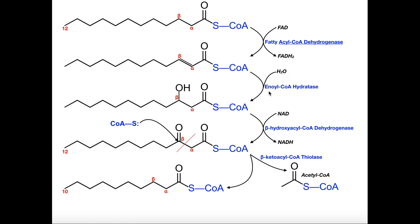The second reaction is catalyzed by enoyl-CoA hydratase. In this reaction, water is added across the double bond at the beta position. When water attacks the beta carbon, we end up with an OH group on the beta carbon. It's called a hydratase because we've hydrated the beta carbon. The double bond is gone, but we've essentially oxidized the beta carbon — thus the name beta-oxidation. This gives us what we call a beta-hydroxyacyl-CoA, because we have a hydroxyl group on the beta carbon.